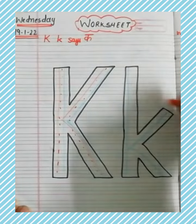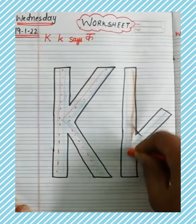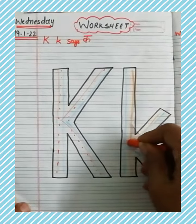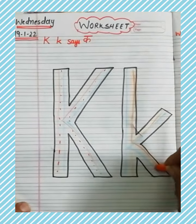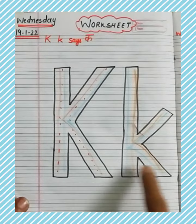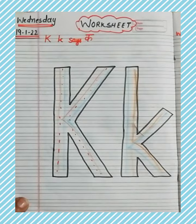फिर से देखेंगे? Standing line, slant line, down slant line. ऐसे आपने different color लेके rainbow राइटिंग करनी है अपनी. Okay?